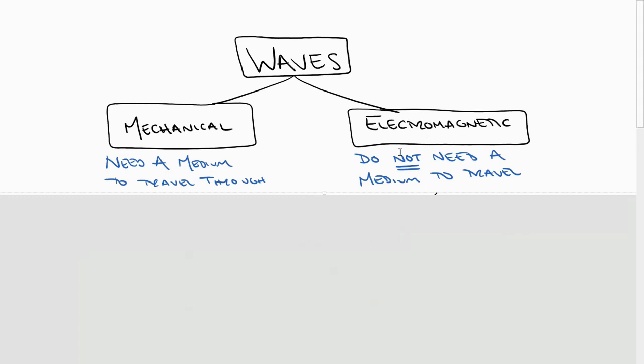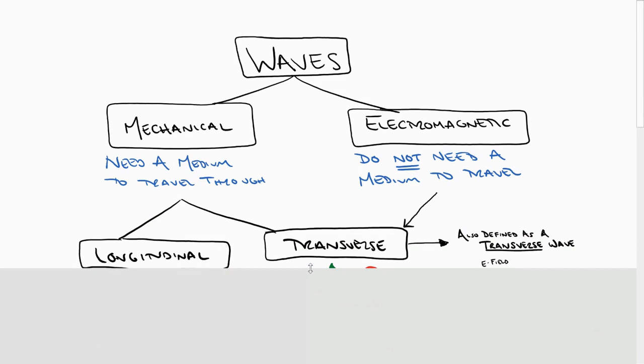Electromagnetic waves, on the other hand, do not. There we go. Now, in terms of types of waves, if we were to break mechanical waves down into two broad categories, as Mr. Anderson did last class, they would be longitudinal and transverse.